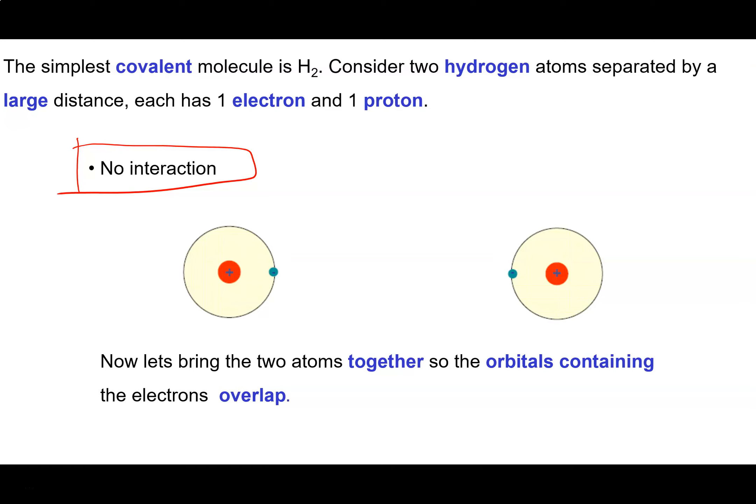It's of interest to consider what happens as we bring these two atoms closer together so that the orbitals containing the electrons on each atom begin to overlap. Let's keep in mind that the electron in the hydrogen atom is in a 1s orbital.